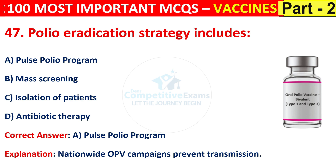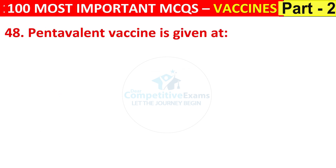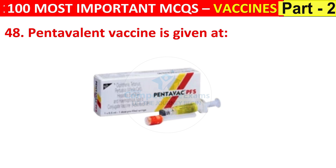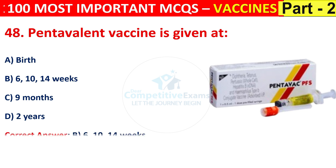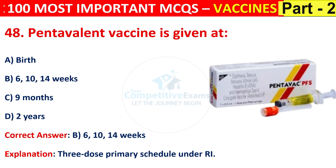Question number 48. Pentavalent vaccine is given at birth, 6/10/14 weeks, 9 months, or 2 years. The right answer is B, that is 6, 10, and 14 weeks. Three doses at 6, 10, and 14 weeks form the primary schedule under RI.